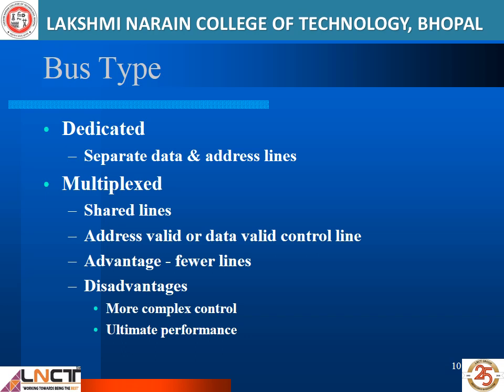The multiplex bus has its own advantages and disadvantages. The advantage is that the processor needs fewer lines, and with those fewer lines the processor can handle both address bus and data bus functions. The disadvantage is that it makes the architecture more complicated. However, overall it is advantageous as it makes the system faster.